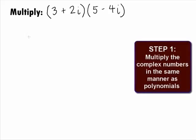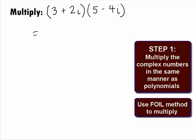In Step 1, we can multiply the complex numbers in the same manner as we do for polynomials. In this problem, we can use the FOIL method to multiply the two binomials.